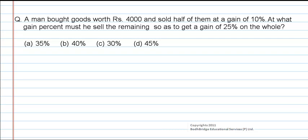Let's work out a problem. A man got goods worth rupees 4000 and sold half of them at a gain of 10%. What gain percent must he sell the remaining so as to get a gain of 25% on the whole? The options are 35%, 40%, 30%, 45%.